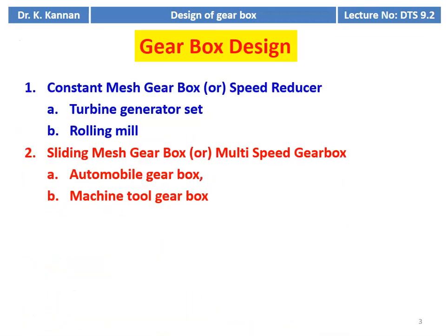For gearbox design, there are two types of gearbox: Constant Mesh Gearbox or Speed Reducer, which we discussed in the earlier lecture, and Sliding Mesh Gearbox or Multispeed Gearbox, which is popularly used in the Automobile Gearbox and the Machine Tool Gearbox. The design procedure for the Multispeed Gearbox will be discussed in this lecture.